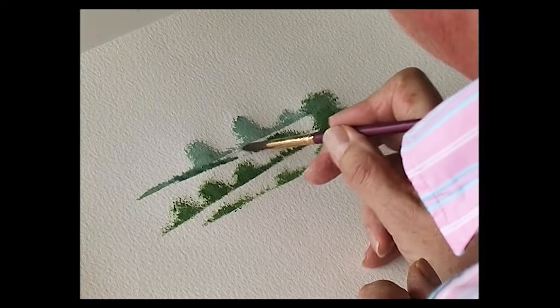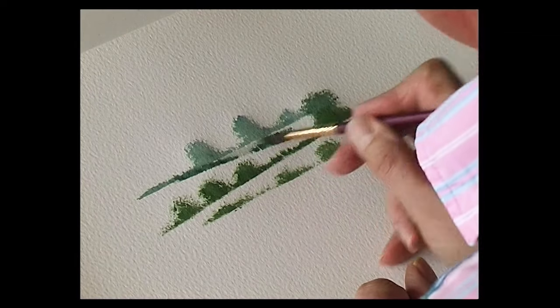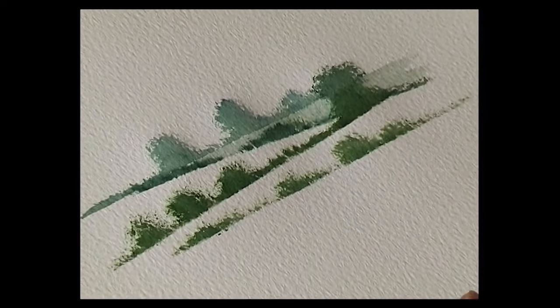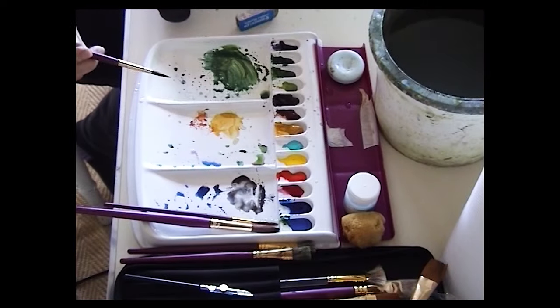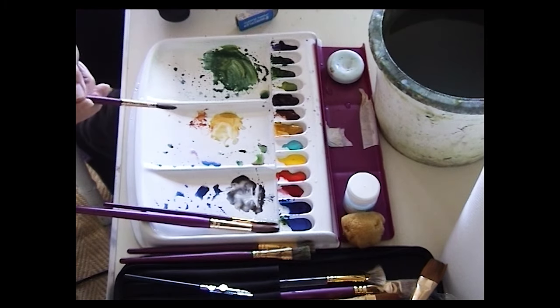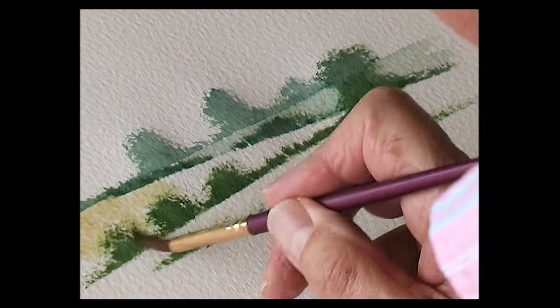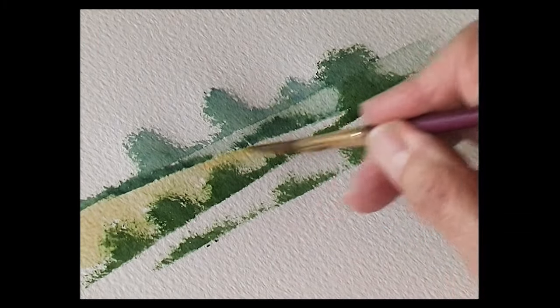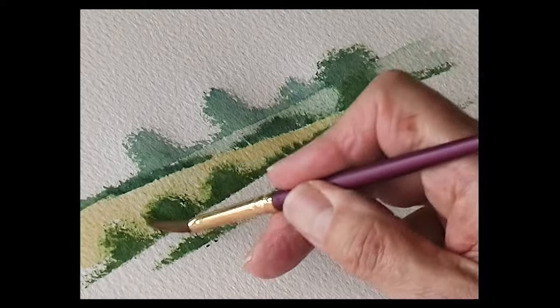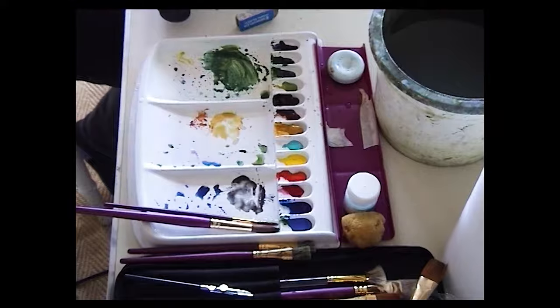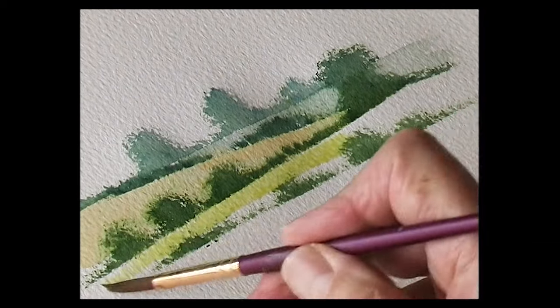When the hedgerows and trees are dry, just drop in a light color in the far distant field like that. Change the color—let's have some raw sienna but very pale—that can go into the next field. Some sunlit green, which is a yellowy green, can go into the front field.